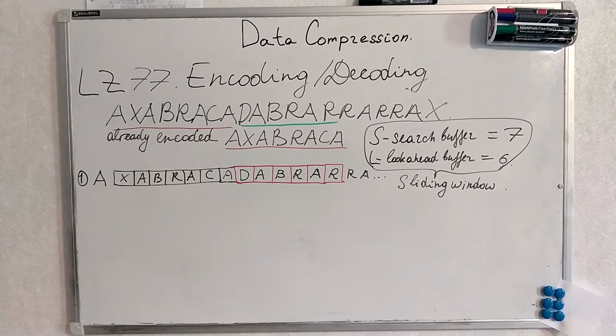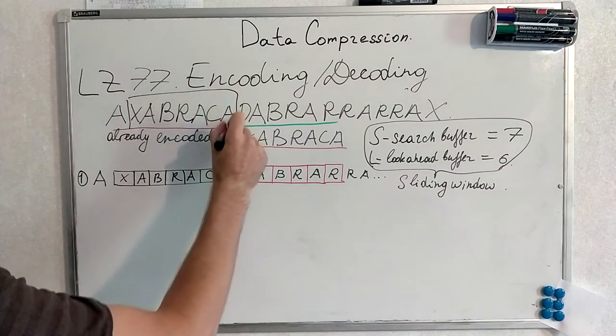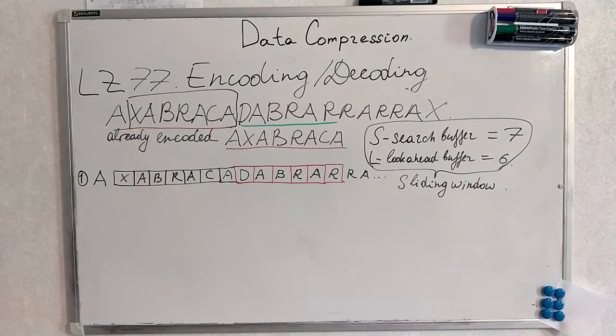What is this mysterious sliding window here? Actually, as I mentioned this sliding window, it is the thing which consists from search buffer and look ahead buffer. This is a search buffer. Search buffer is a thing, is a slot where we are looking for the symbols and look ahead buffer contains the symbols we are encoding.